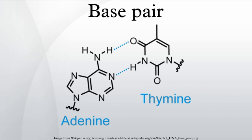Many DNA-binding proteins can recognize specific base pairing patterns that identify particular regulatory regions of genes. Intramolecular base pairs can occur within single-stranded nucleic acids. This is particularly important in RNA molecules, where Watson-Crick base pairs permit the formation of short double-stranded helices.